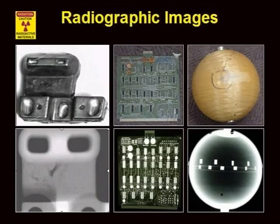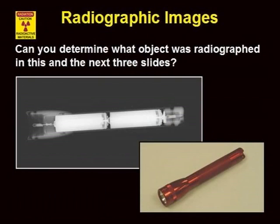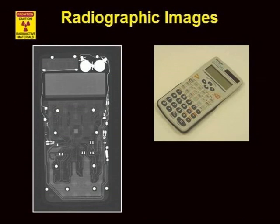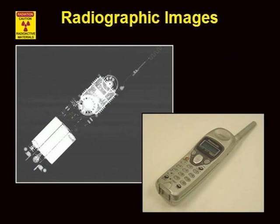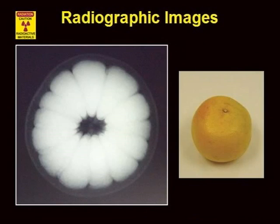This slide shows some visible light photographs of some objects and the corresponding radiographs, which show some internal structural details. The next four slides show some objects and their corresponding radiographs — see if you can determine what the object is from the radiograph. The objects shown include a flashlight, a calculator, a wireless phone, and a tangerine.